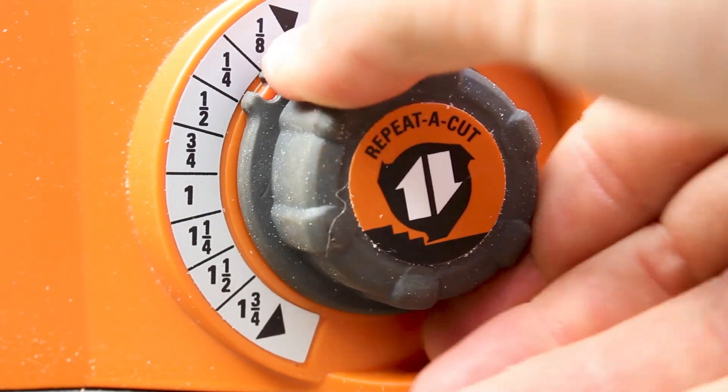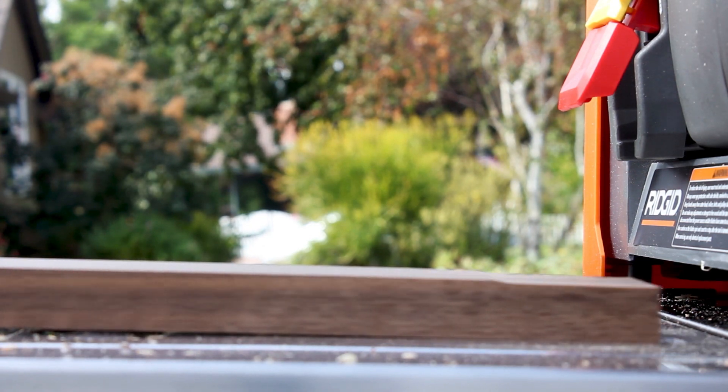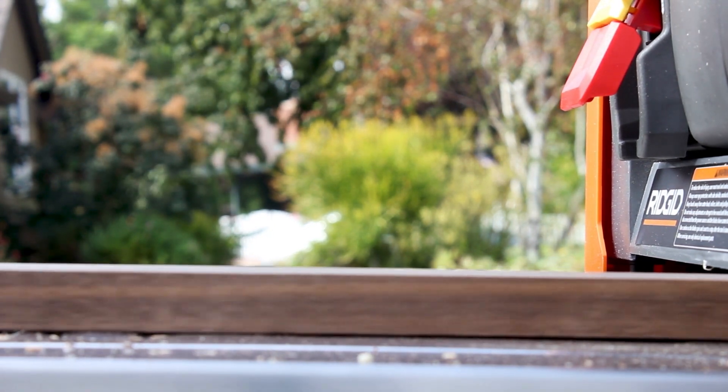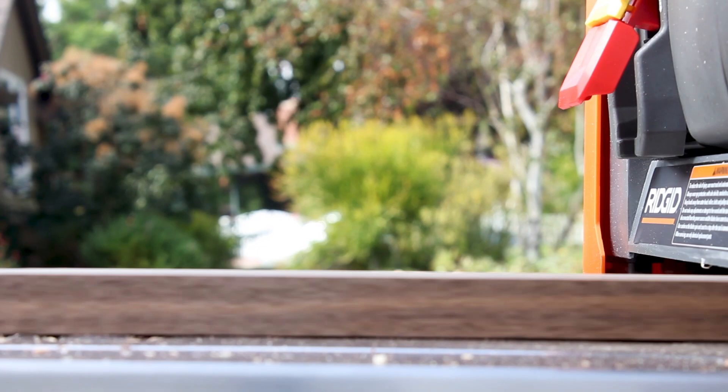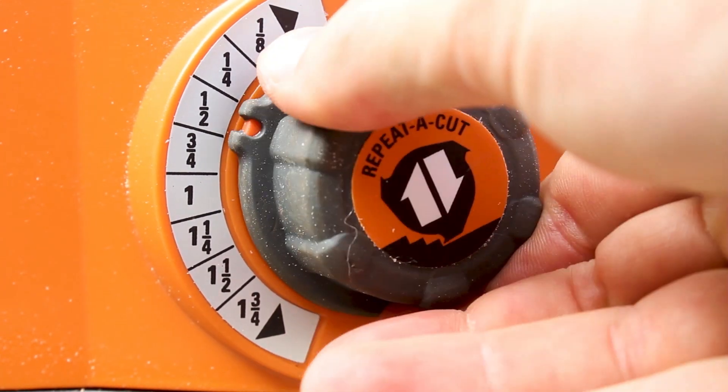The next day I planed down my pieces to the thickness that matched the design that I had in my head. The walnut would be around a quarter of an inch and the maple would be about half an inch.